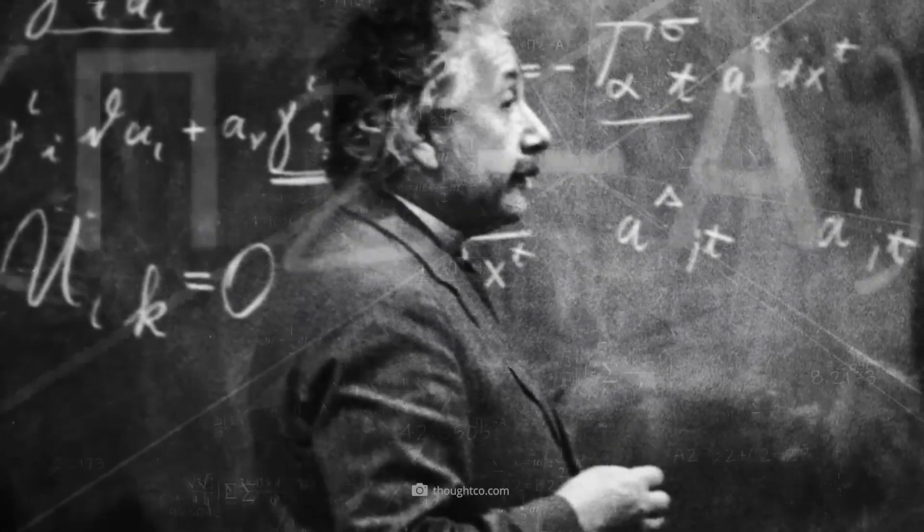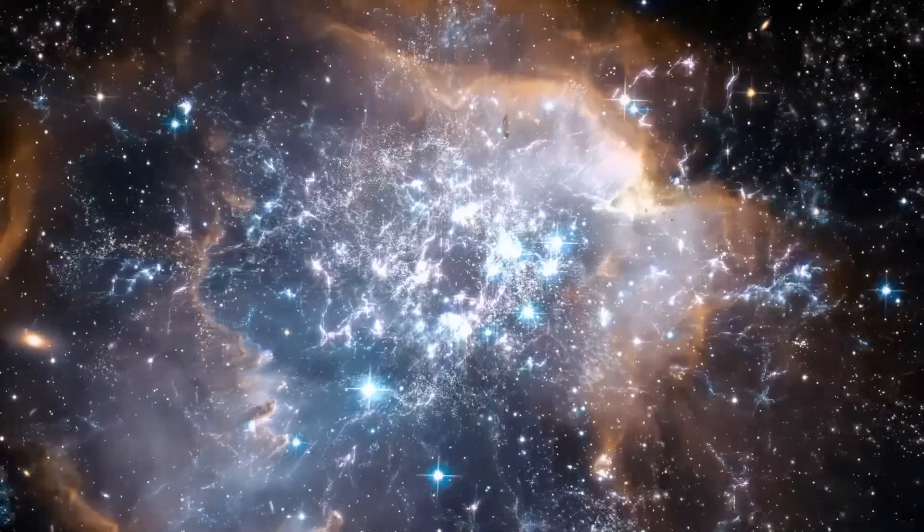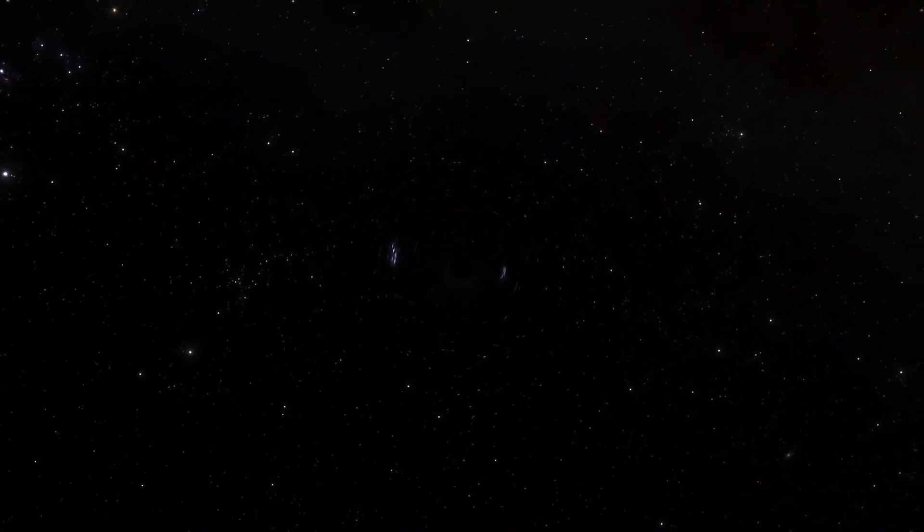Albert Einstein and his groundbreaking theory of general relativity, which predicted that light could be bent by gravity. This observation fulfills Einstein's prophecy, reaffirming the brilliance of his ideas.